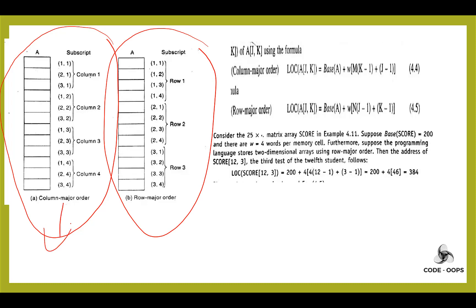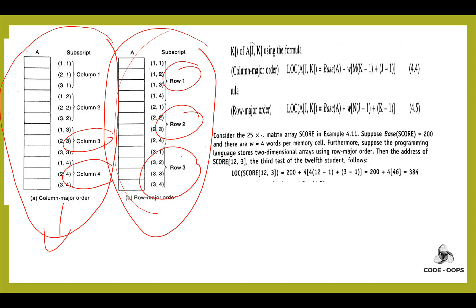In column major order, first the first column is stored, then the second column, then the third column, then the fourth column — elements are stored column-wise. In row major order, the first row is stored first, then the second row, then the third row, and so on — elements are stored row-wise.